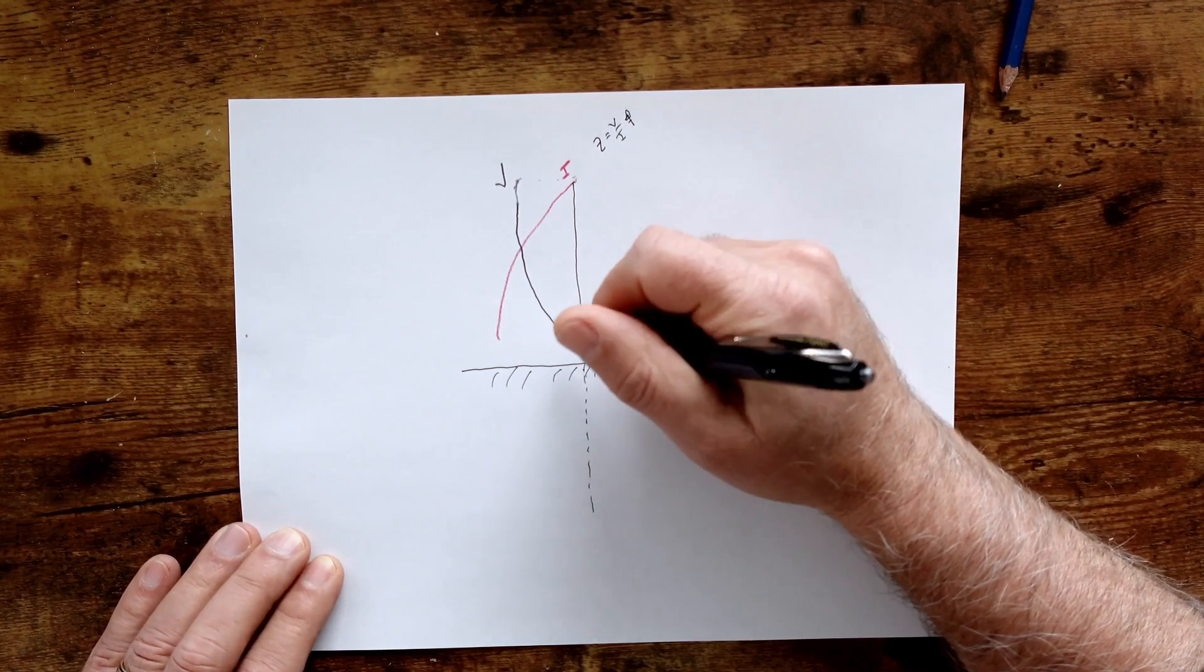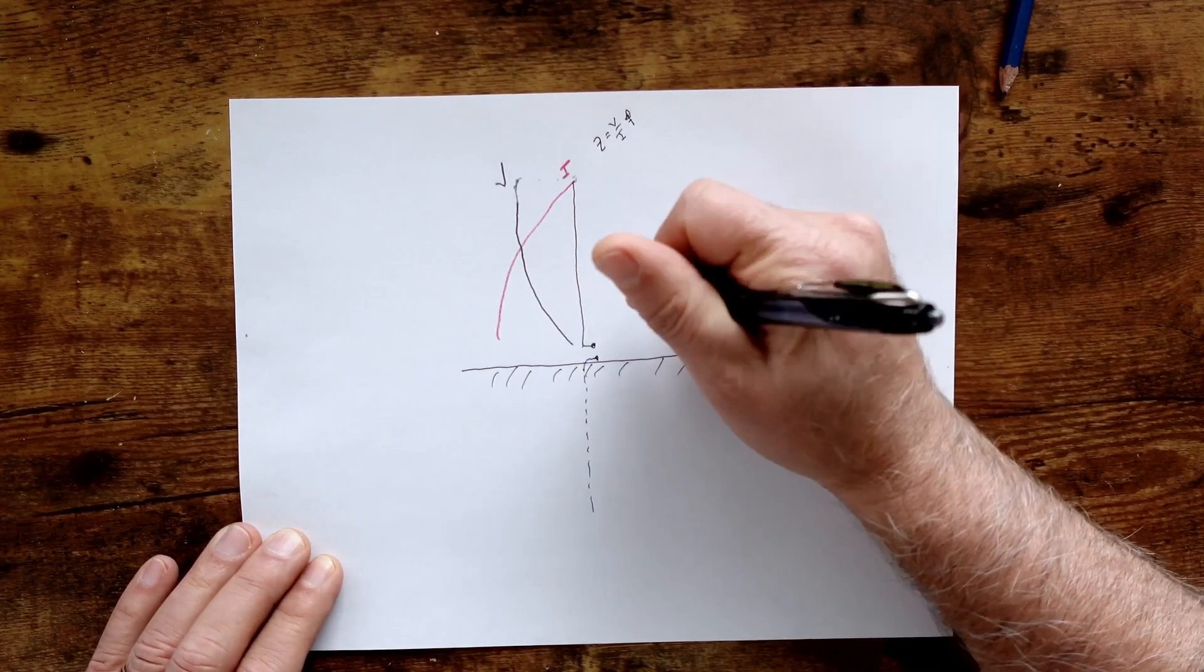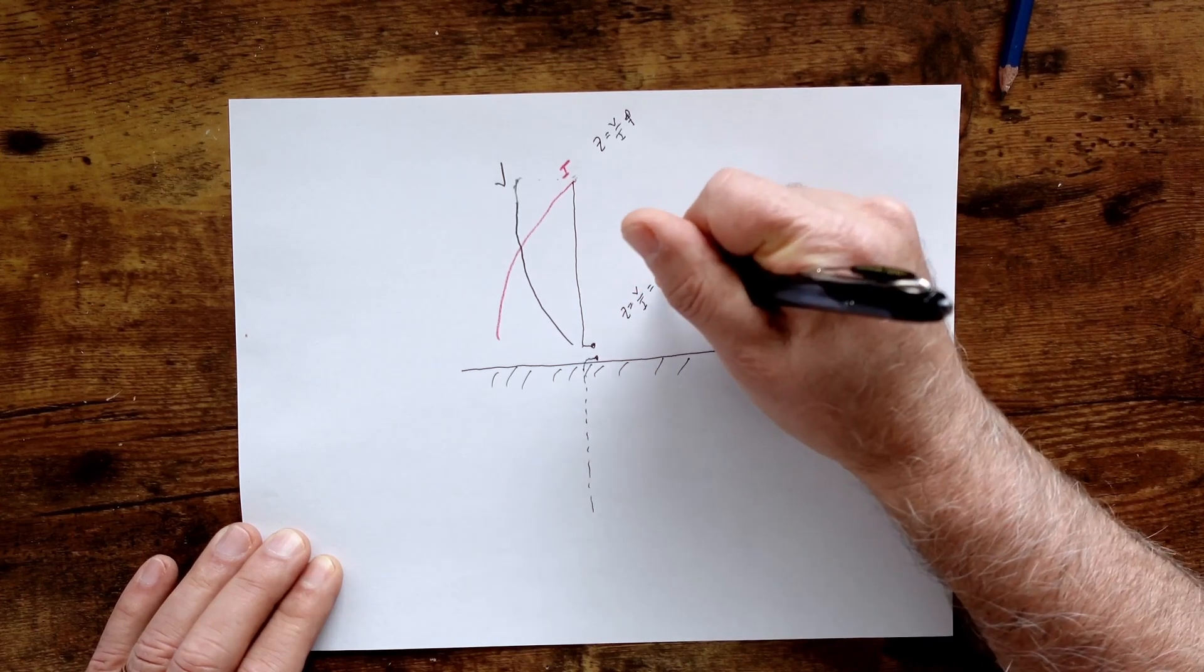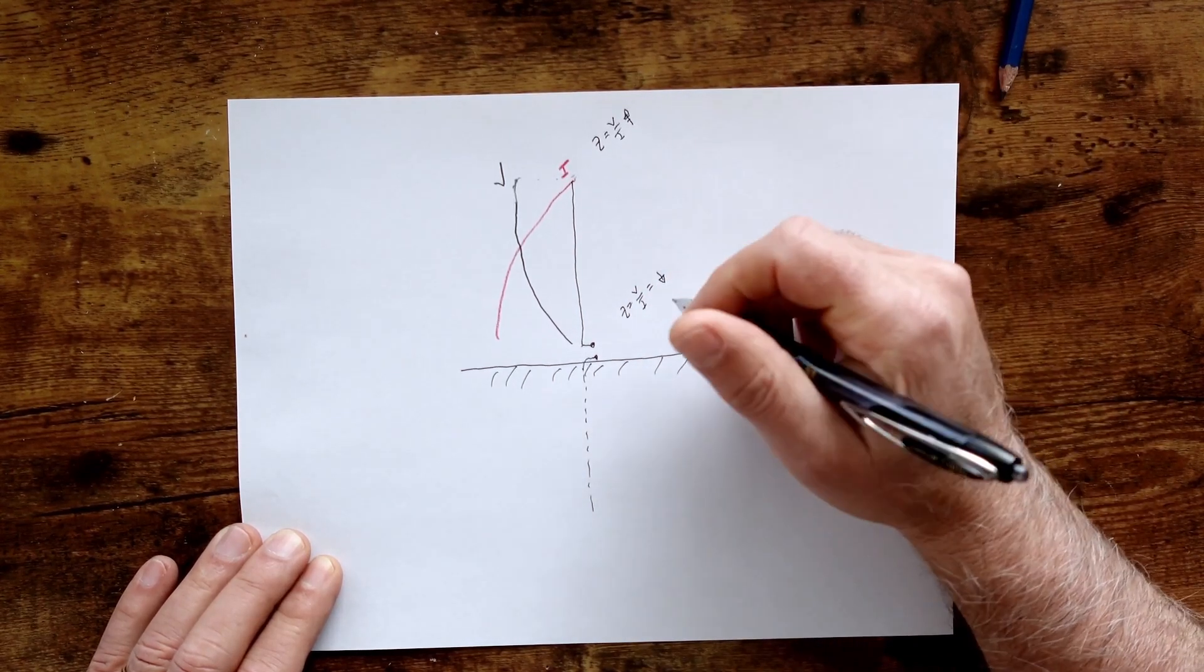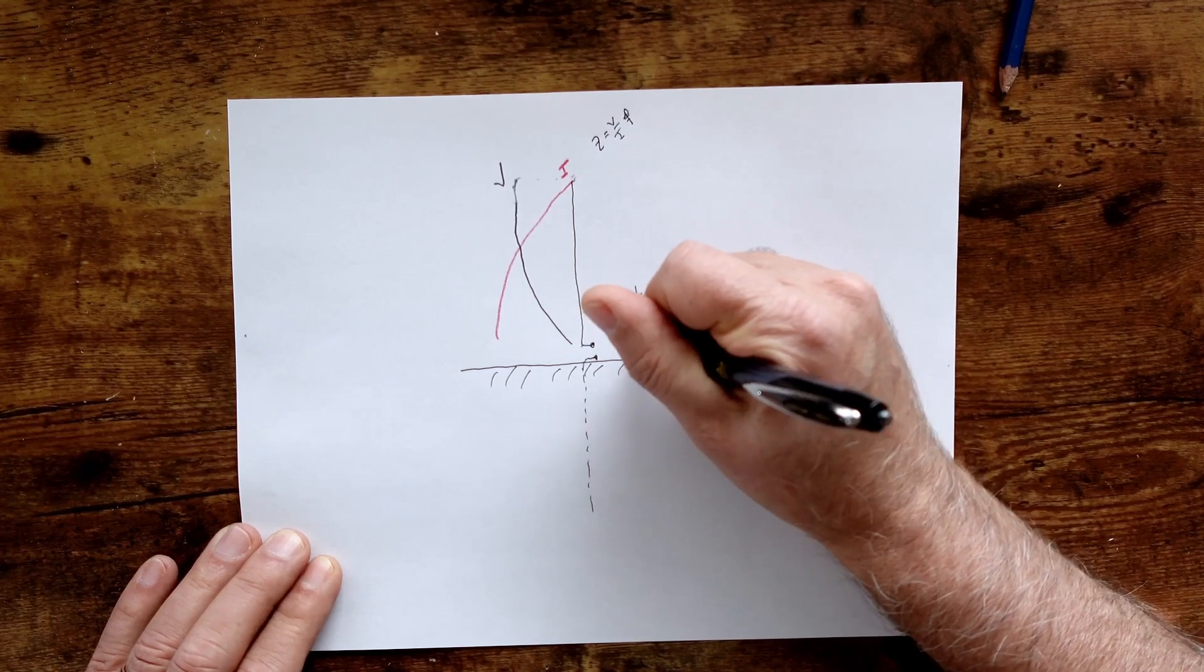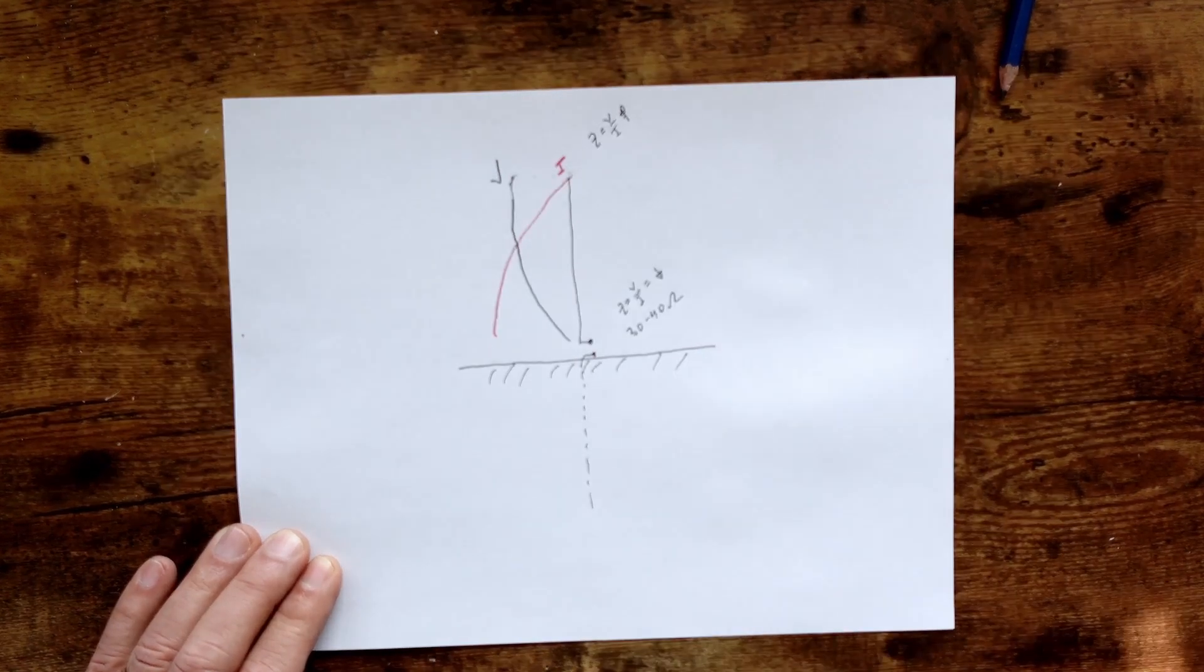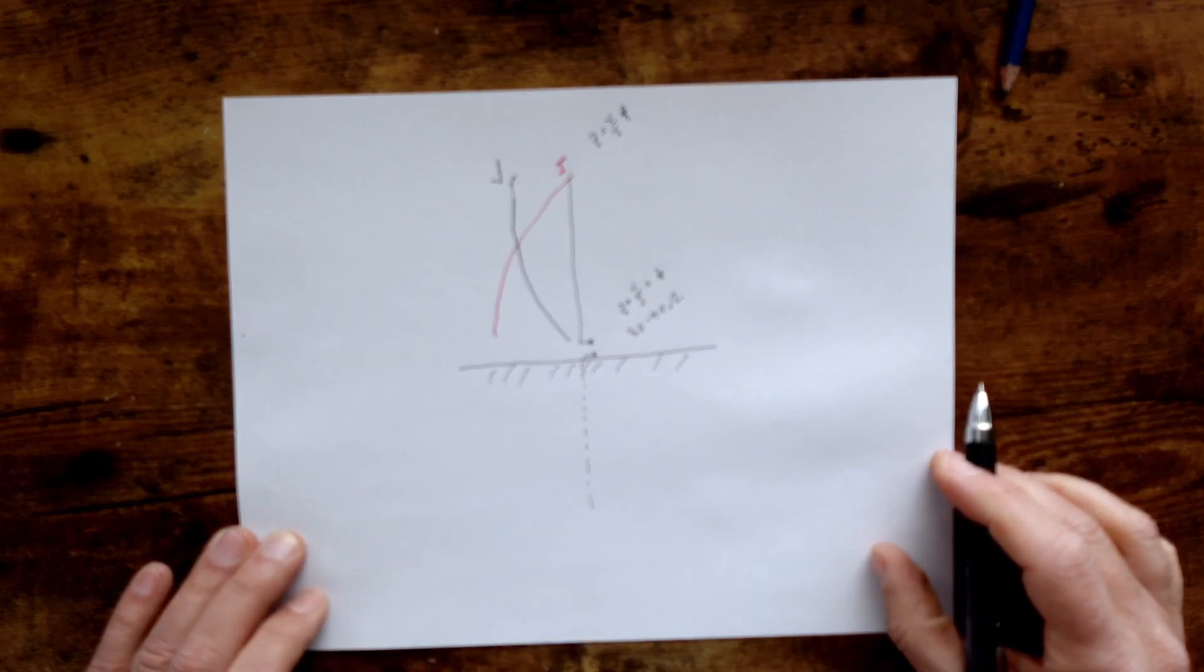At this point, you have low V, high I. So Z, again, V over I. So this is going to be relatively low. And it turns out that this is somewhere between 30 and 40 ohms at this point. So you can feed it with a regular coax, a 50 ohm coax. That's kind of nice.